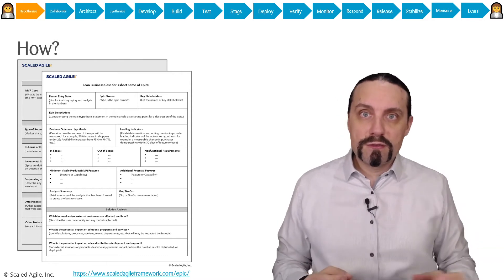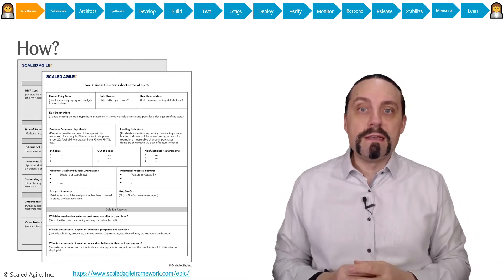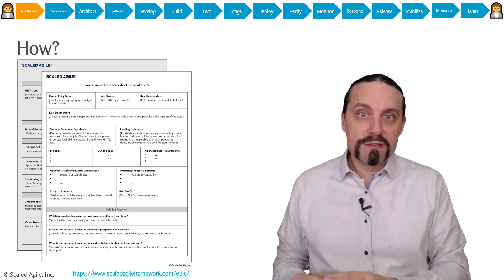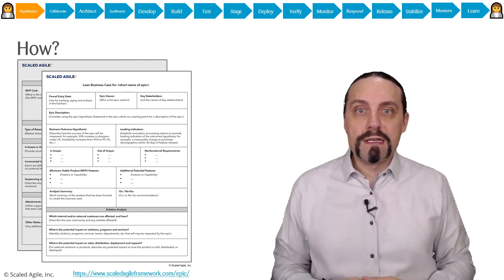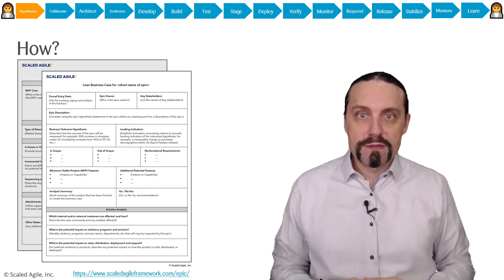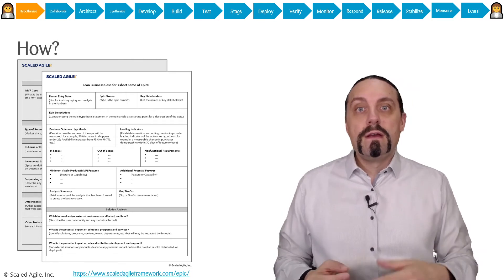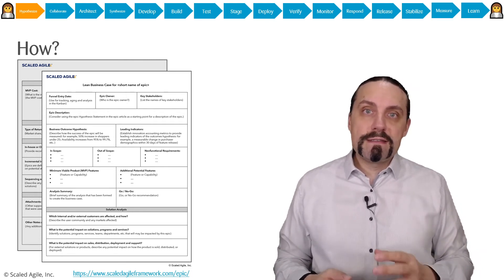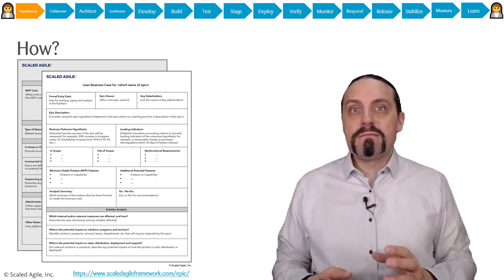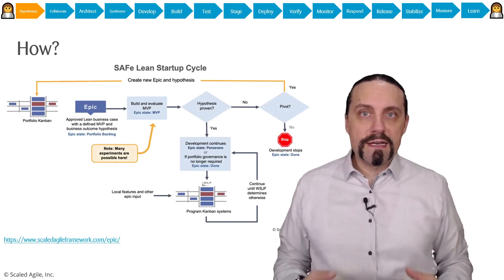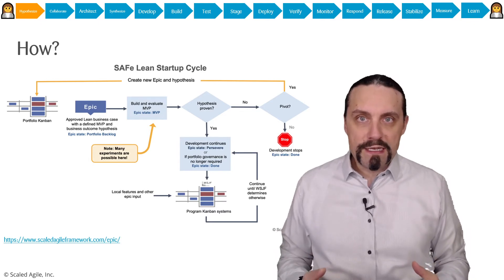There we define what the MVP is. And also what the full solution may be. And also we define what the MVP will cost. And what the full implementation will cost. So that we have a lean business case. To create this lean business case you will need roughly two to four hours.